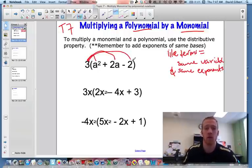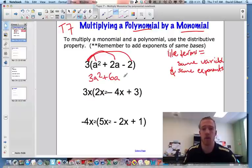Here I'm going to distribute just as I would, so 3 times a squared is 3a squared, 3 times 2a is a positive 6a, 3 times a negative 2 is a negative 6. Piece of cake.